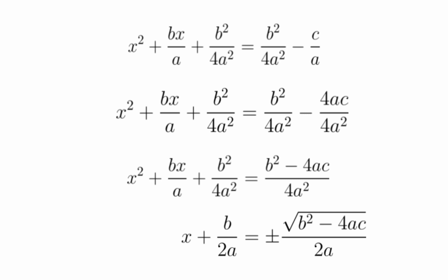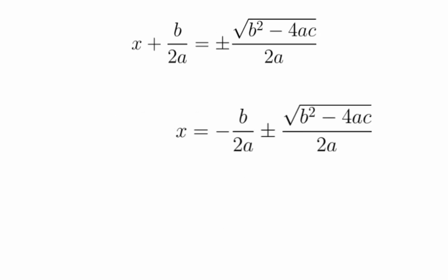And, here, we are just going to take that plus b over 2a to the other side. And, then combine that into one big fraction. So, you get the final quadratic formula, x equals minus b plus or minus the square root of b squared minus 4ac all over 2a.